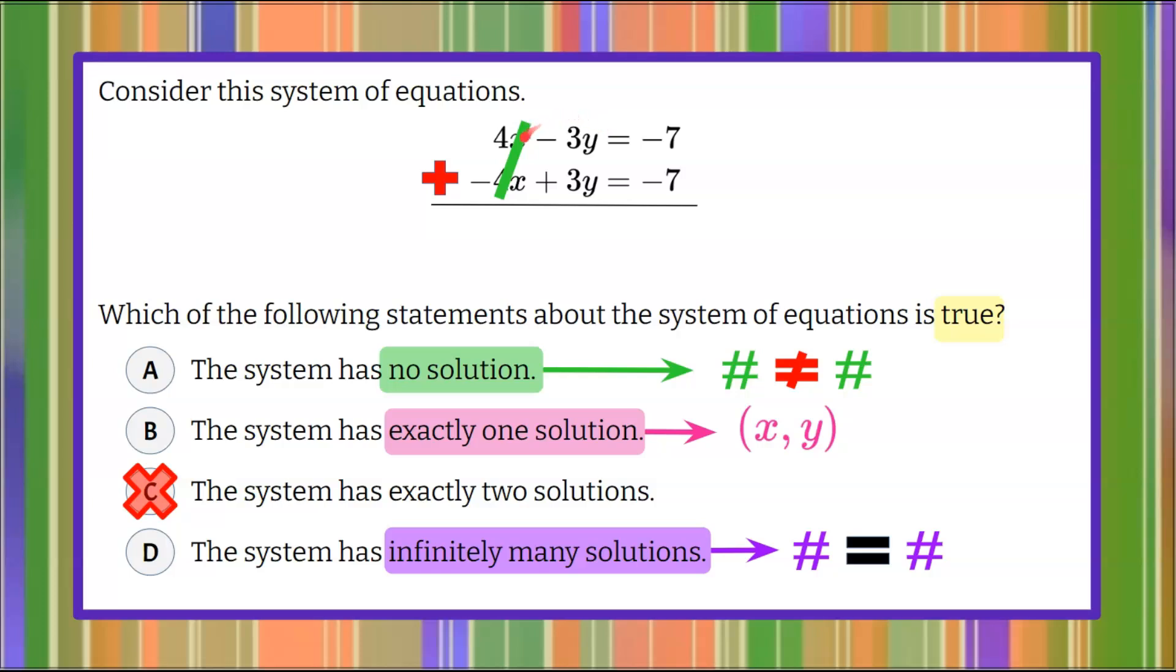When I look at adding negative 3y and positive 3y, those are also opposites, forming another zero pair. So on the left side of my system, when I add, I'm going to get a value of zero. That is going to be equal to negative 7 add negative 7, which is negative 14.